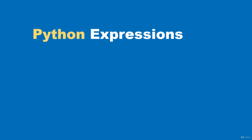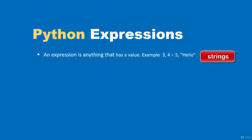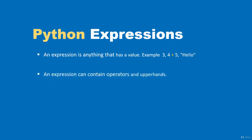In this video we'll look at Python expressions. An expression is anything that has a value — for example, the number 3, '4 + 5', or the string 'hello'. Texts are referred to as strings in Python. An expression can contain operators like the plus operator, and operands — in '4 + 5', four and five are operands while the plus is the operator.